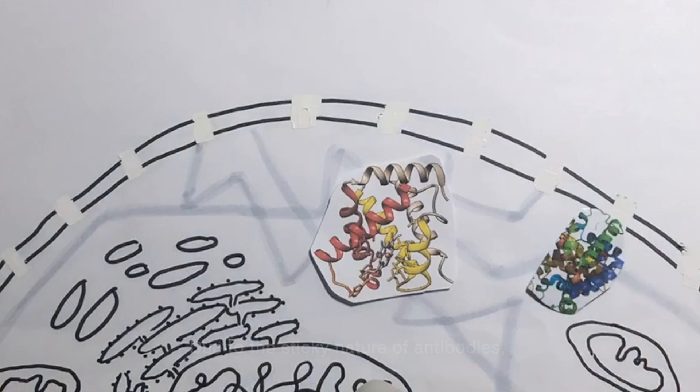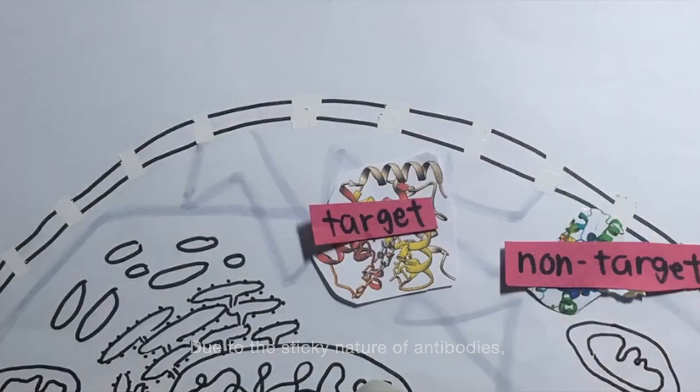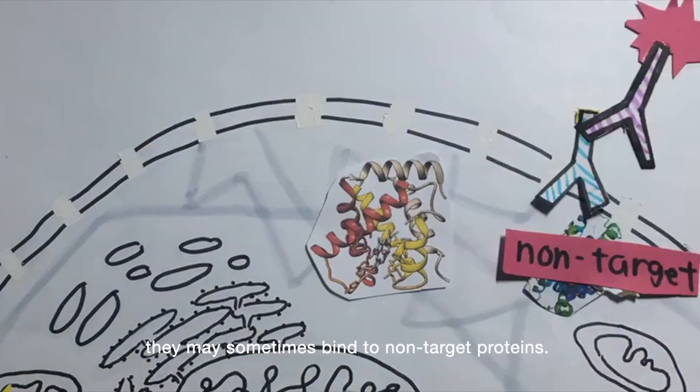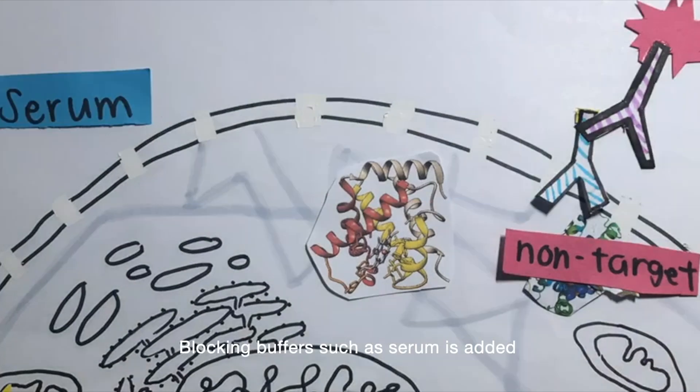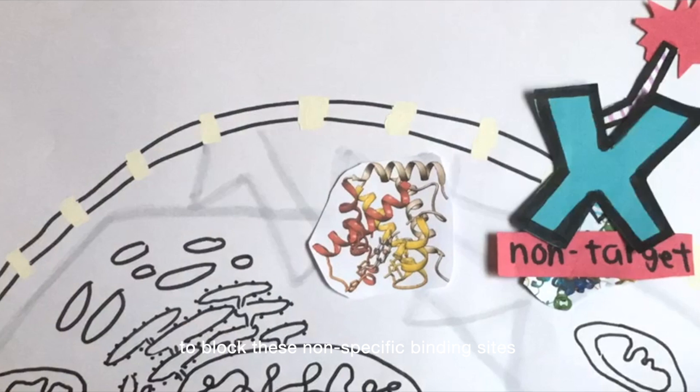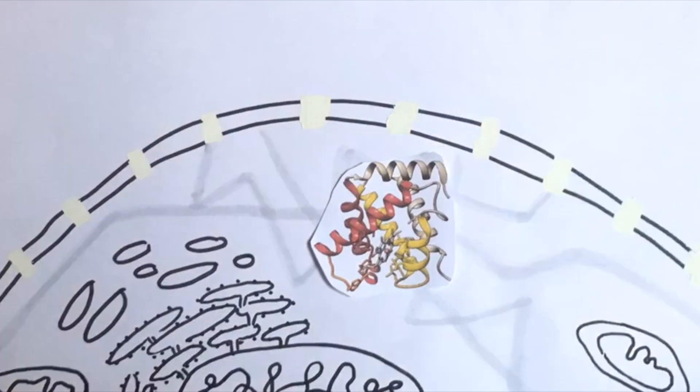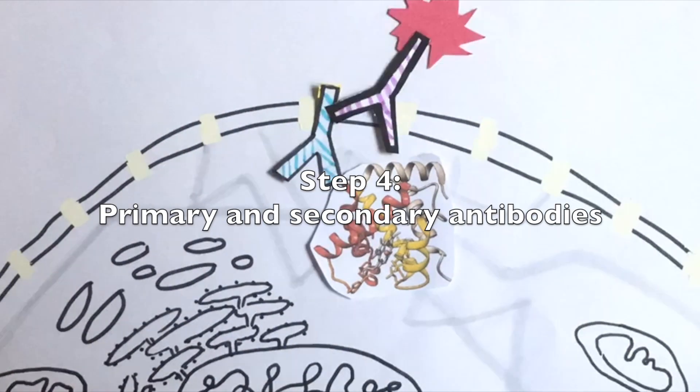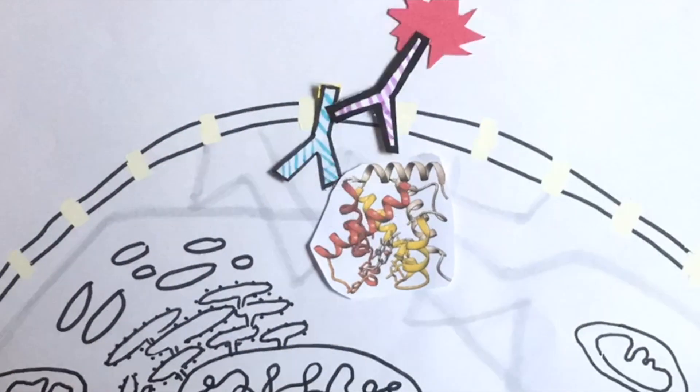Step 3, blocking. Due to the sticky nature of antibodies, they may sometimes bind to non-target proteins. Blocking buffers such as serum is added to block these non-specific binding sites, hence allowing scientists to locate the actual protein of interest. Last but not least, primary and secondary antibodies are added to visualize the protein of interest.